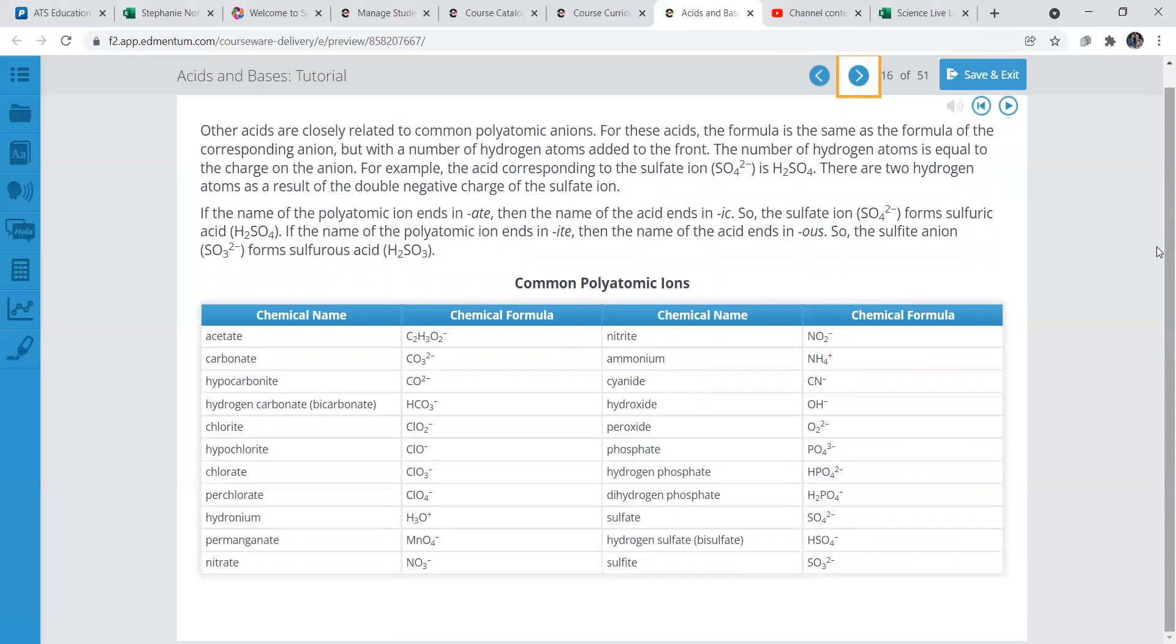Common polyatomic ions. And let's see. Here's the chemical name, formula, chemical name, and then chemical formula. So we have two different sections here. So then here's like the example of what they are, and here's their chemical formula.